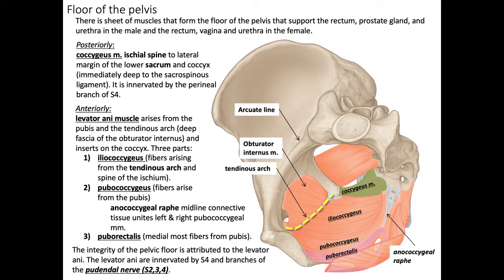Now we will move on to the musculature of the floor of the pelvis. Posteriorly, we have the coccygeus muscle, just deep to the sacrospinous ligament. It attaches from the ischial spine to the lower sacrum and coccyx, and is innervated by S4. Anteriorly, we have the levator ani group, which attaches from the pubis and tendinous arch to the coccyx. The three muscles that make up the levator ani are the iliococcygeus, pubococcygeus, and puborectalis. The levator ani muscles are innervated by S4 and the pudendal nerve. Using our bowl analogy, the levator ani muscles form the bottom of the bowl.